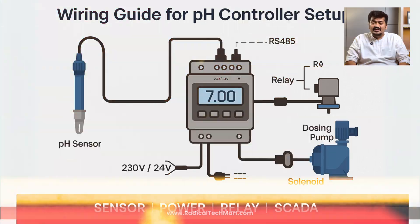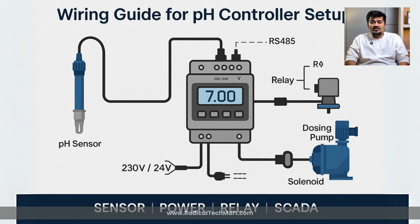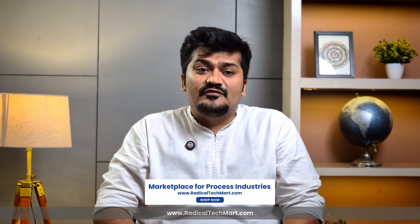Now let's cover wiring, installation and integration. Wiring a pH controller typically involves: sensor input via direct electrode or transmitter output; relay output to a dosing pump or solenoid valve; power supply, usually 230V AC or 24V DC; and an optional communication port if you want SCADA or BMS logging. Some controllers also offer dual control channels for acid and alkaline dosing from a single unit. Always ensure proper grounding and cable shielding for stable readings.